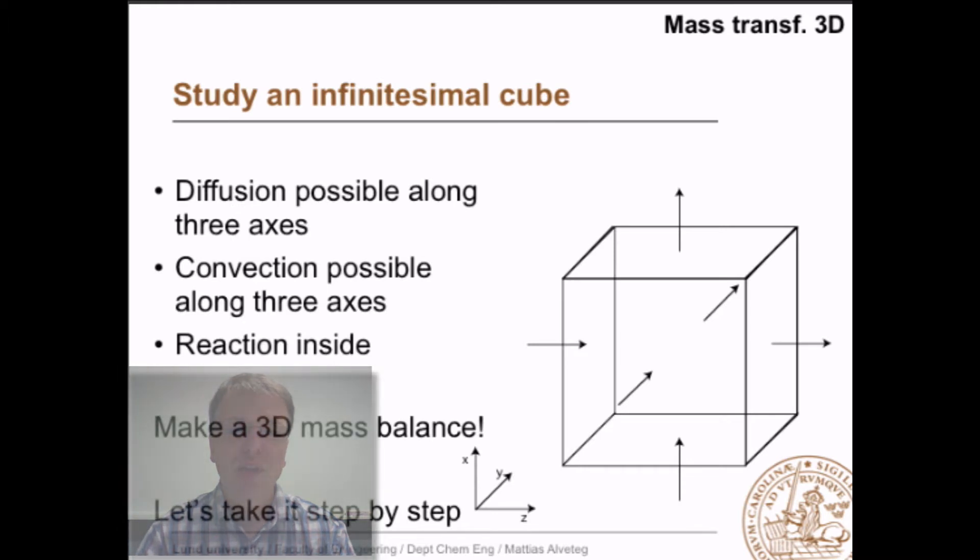To derive the 3D mass balance we study an infinitesimal cube where we have diffusion possible along three different axes, convection possible along three different axes, and a reaction inside. But let's take it step by step.